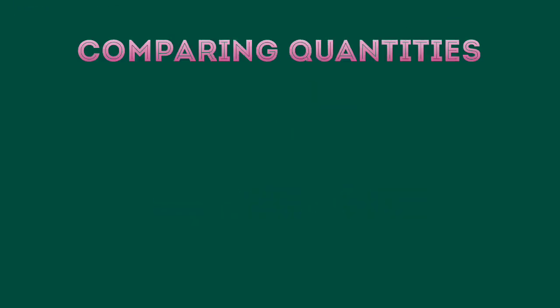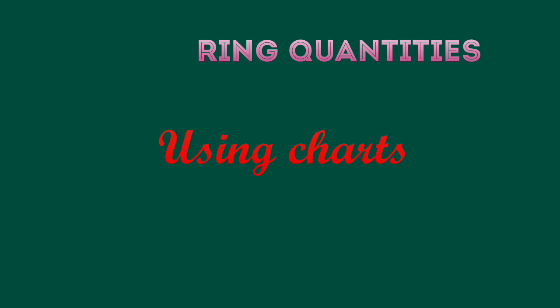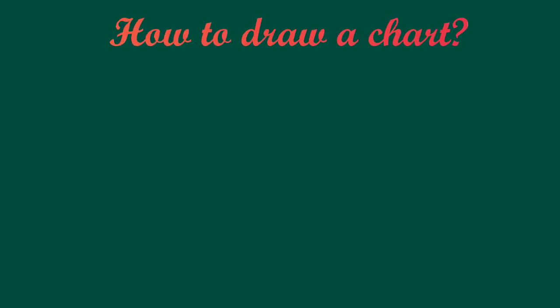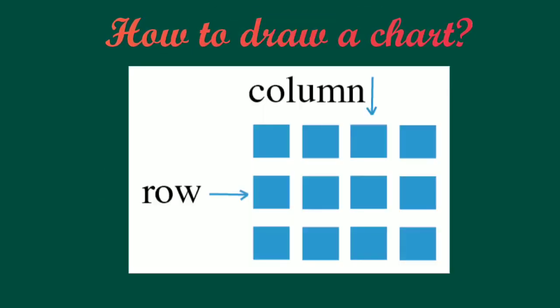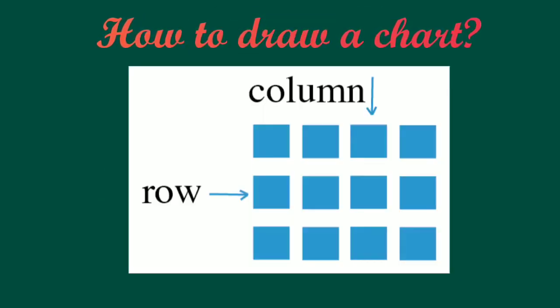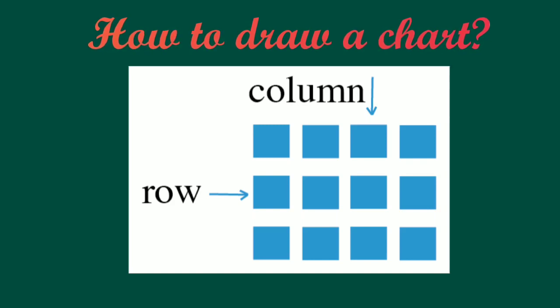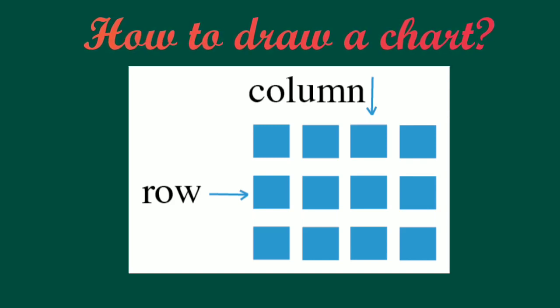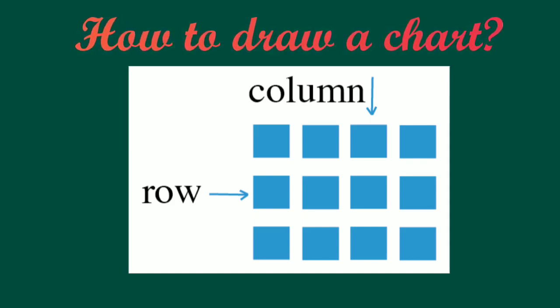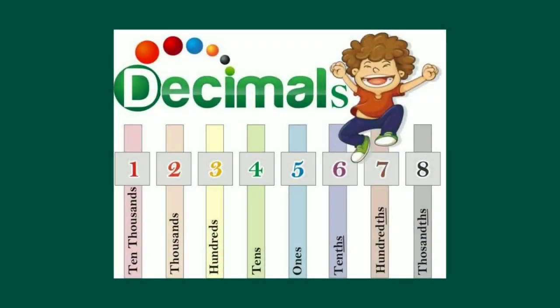Do you know that we can also compare quantities with the help of charts? So how do we draw a chart? Draw boxes with rows and columns. Horizontal boxes will be rows and vertical ones are columns. While comparing quantities with the help of a chart, we need the decimal system, which we have learned in our previous classes.